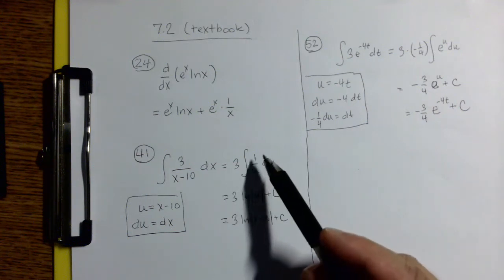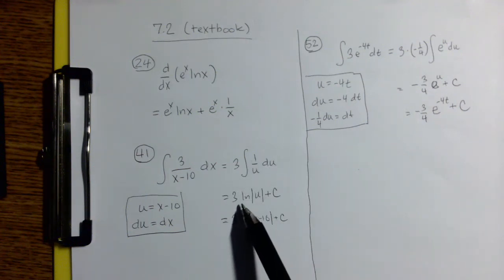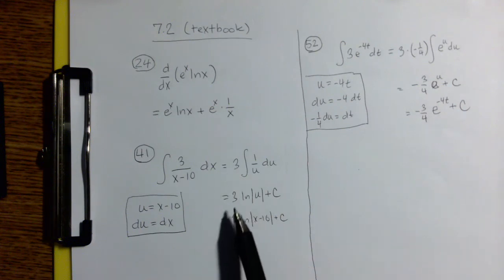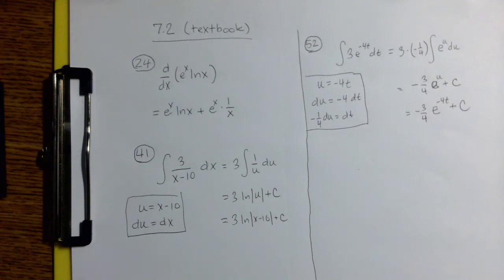So this becomes 3, the indefinite integral of 1 over u du. And the rule for 1 over u du is that that becomes the natural log of the absolute value of u. And of course, we get the plus c. We have that coefficient 3 in front, so that needs to be there as well.